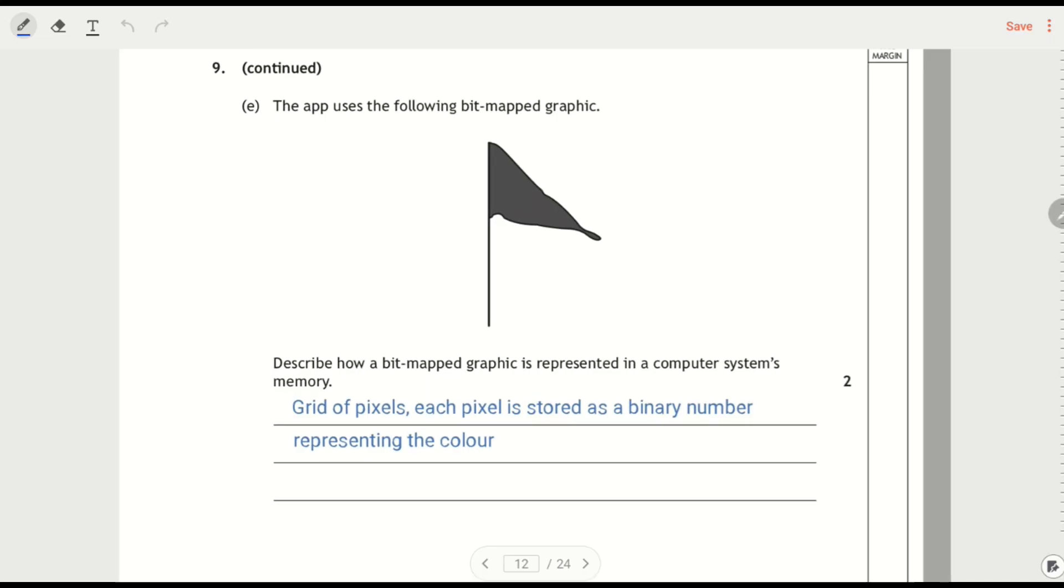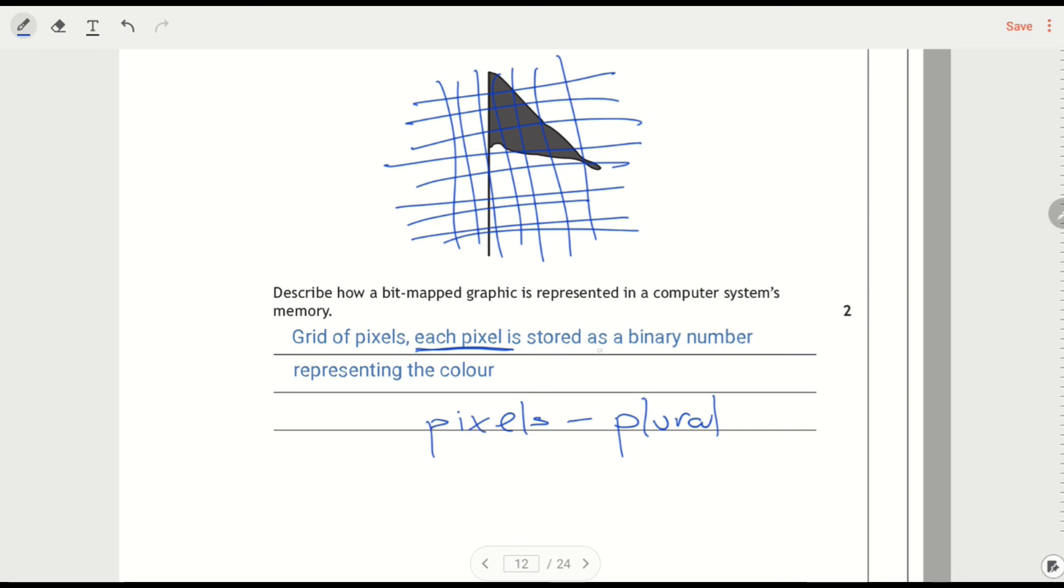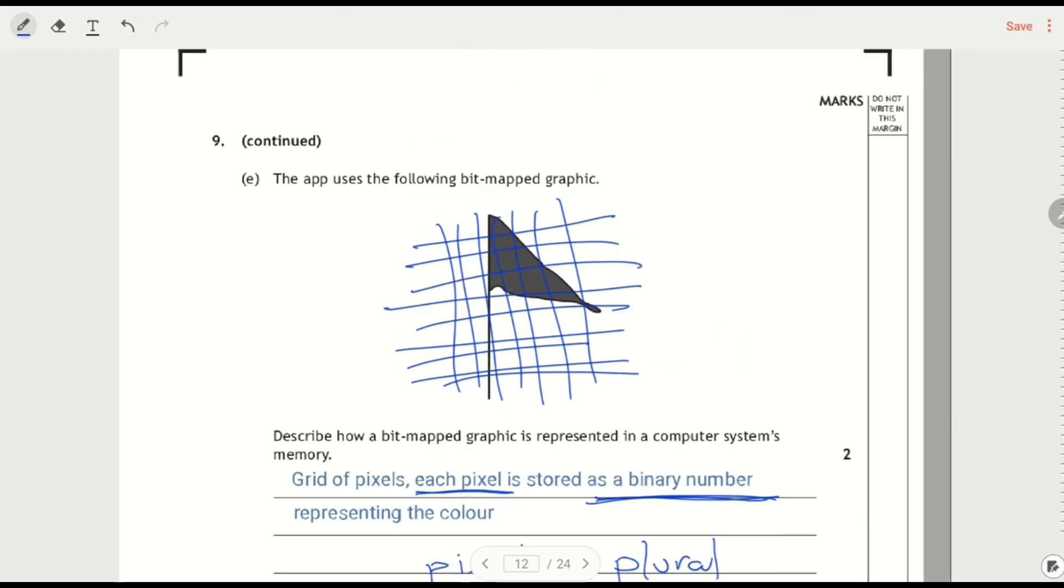Right, last thing. We've got this image of a flag, and it's a bitmap graphic. Remember, the idea is a bitmap is split up and we're storing all the pixels individually instead of storing whole shapes. Each pixel—the important point is here—it's pixels plural. You get more than one pixel in it. And they're stored as binary numbers, and the binary number represents the colour. If you said each pixel is stored as a binary number, that's going to get you both points.